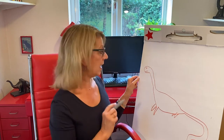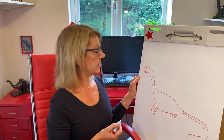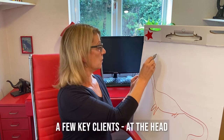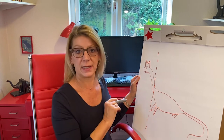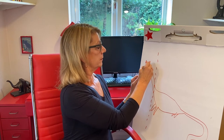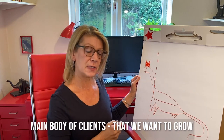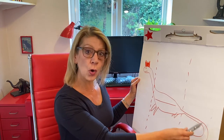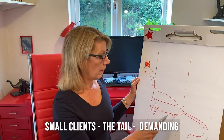Hopefully you can see my dinosaur. Now when we think about client portfolio management, there are probably a few key clients — the ones at the head of the dinosaur. If we lose those, it's kind of instant death. We could call these our crown jewel clients. Then we have the main body of clients that we look after, some of which we want to grow. And then there's this long tail — these are the smaller clients, and maybe some might grow.